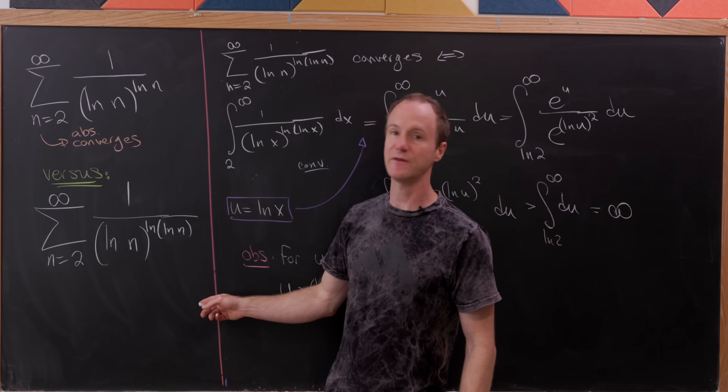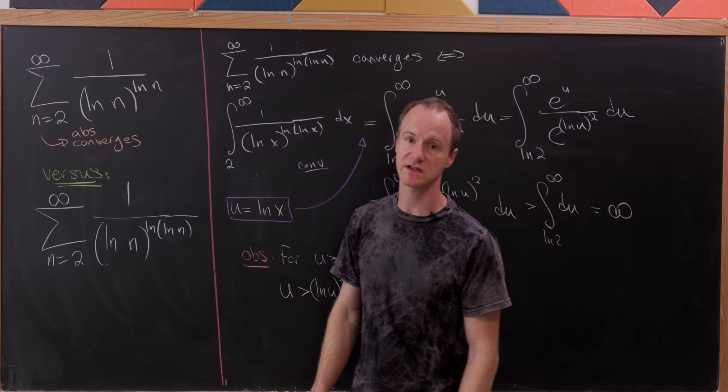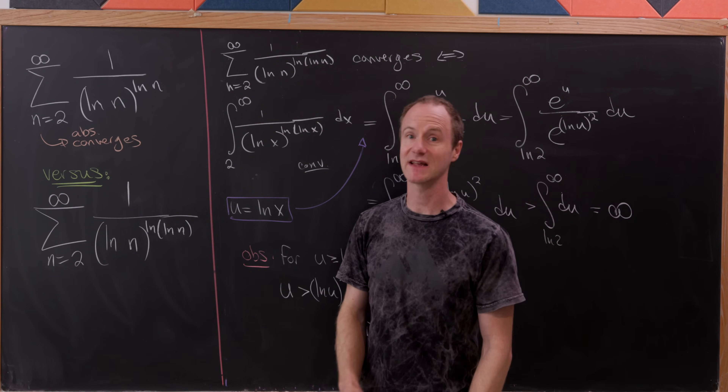So we've finished this off: our first sum — 1 over (log n) to the power (log n) — converges, while our second sum — 1 over (log n) to the power (log log n) — diverges.